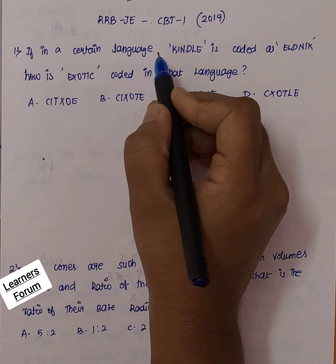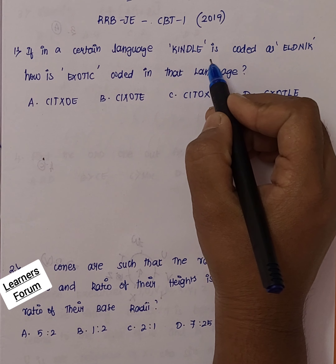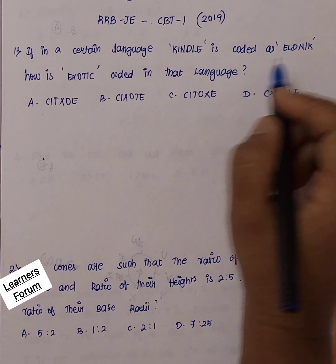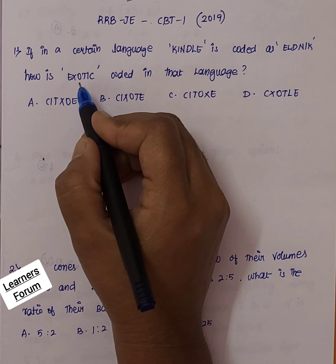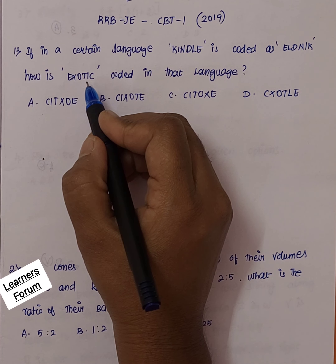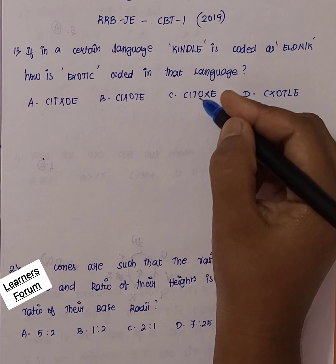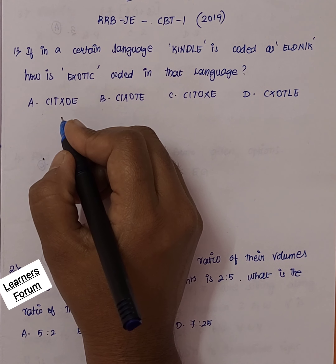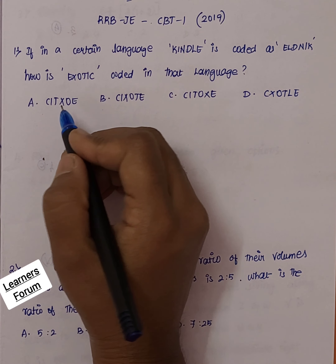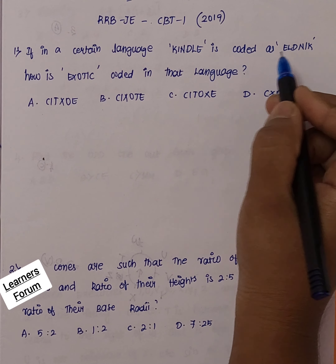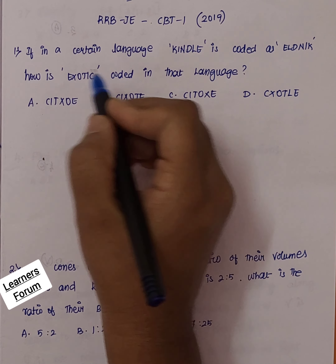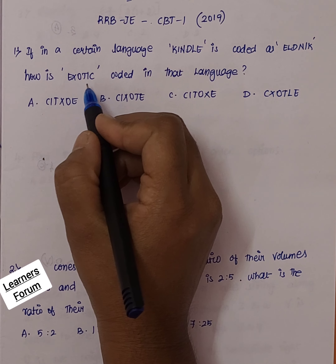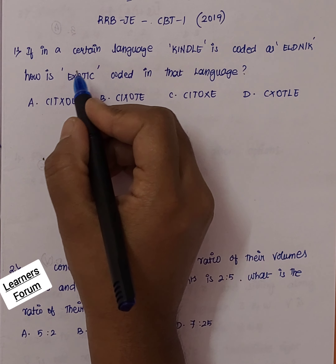First question: if in a certain language KINDLE is coded as ELDNIK, how is EXOTIC coded in that language? To solve this question, we need to identify the relation between the two words, from which we can identify how this particular word can be coded in the same language.